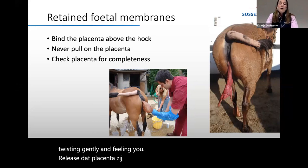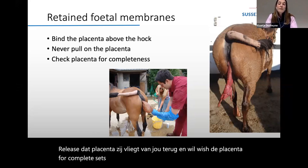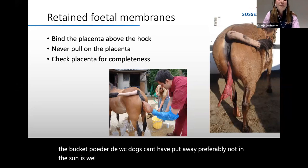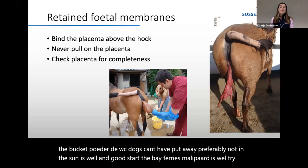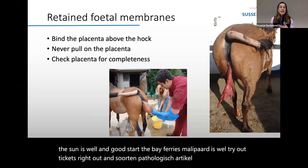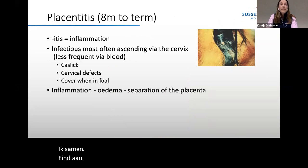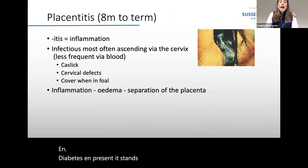Mares can get very ill with a retained placenta — they can develop toxemia, laminitis, and potentially die if untreated. Unlike cattle, which can retain a placenta for weeks without serious consequence, this is definitely not the case in horses. Never pull on a placenta; tie it above the hock. To remove it we use oxytocin to induce uterine contractions, then often fill the uterus with fluid to feel where it is still attached, and by gently twisting we can safely release it. Always check the placenta for completeness — keep it in a bucket away from dogs and out of the sun.